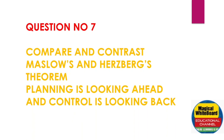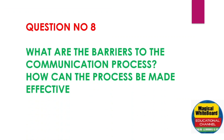Planning is looking ahead and controlling looks back — explanation needed. Question Number 8: What are the barriers of communication? The communication process is very complex. How can the communication process be made effective? This is a definite important question. Also cover the components of the communication process in diagram format.